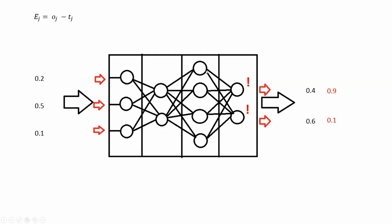Think of it this way: we have these output neurons and these weights. The higher a weight is, the higher the influence from that output error is on the hidden neuron's error. So if this output error is high and this weight is high, this hidden error must be high as well. This applies for each connection. The most intuitive way is to take the sum over the weights times the output error signals to get the error of a hidden neuron.